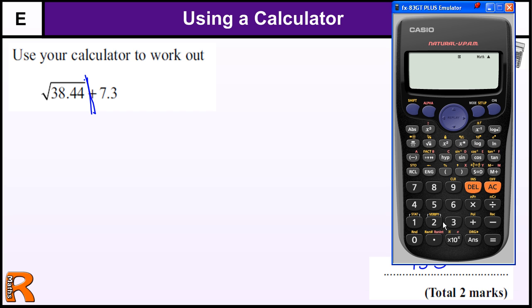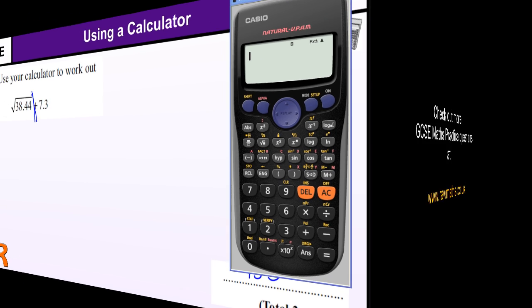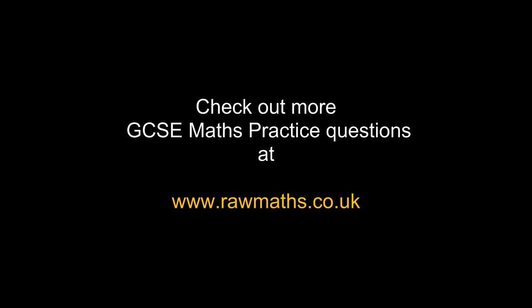Obviously this doesn't work on this calculator. If you have an older calculator that doesn't show things this way and it's not working like this, try pressing the numbers first, then square root, then plus 7.3, and hopefully you'll get the same answer.